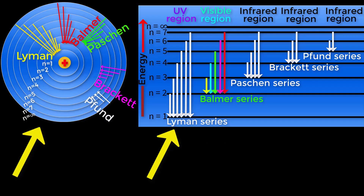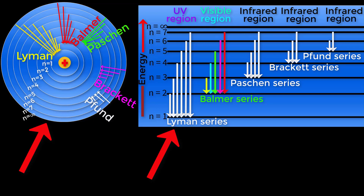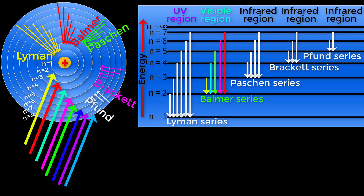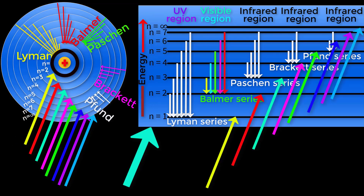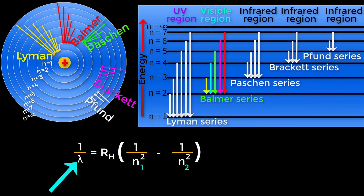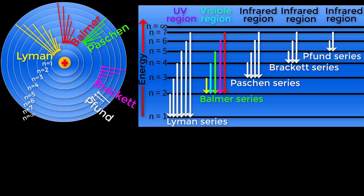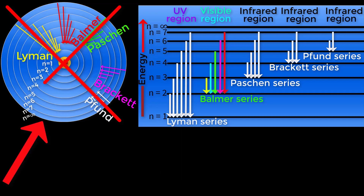First, look at these two energy level diagrams of hydrogen atom. These two diagrams are actually the same — the only difference between them is their shape. The energy levels of the first diagram are in circular shape, but the energy levels of the second diagram are in a straight line shape. To calculate the wavelength of a spectrum series, we can use either diagram, but it will be easier to understand spectral series from the straight line diagram, so we will use that one.